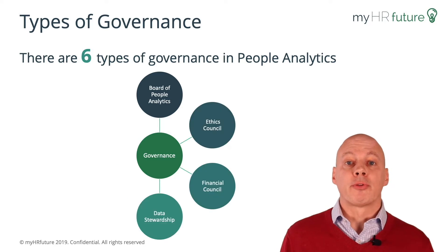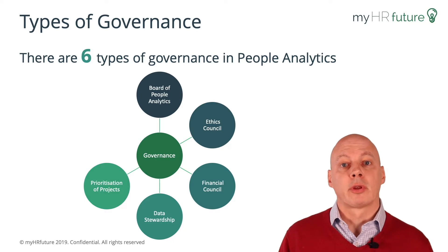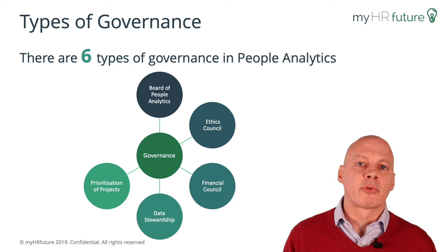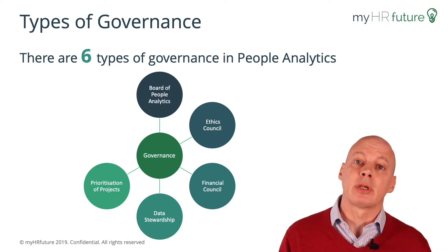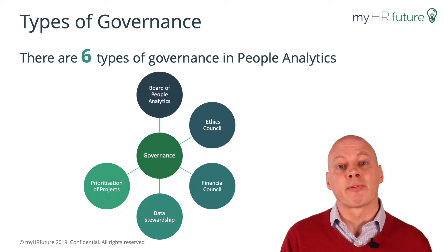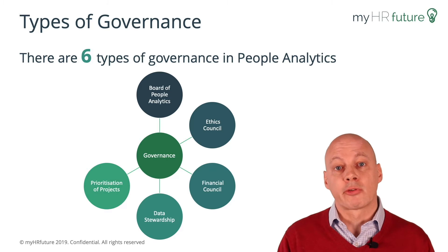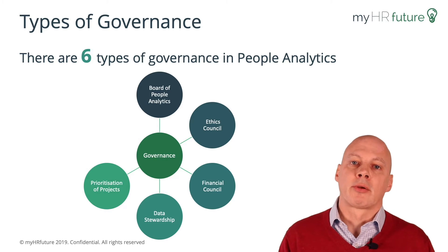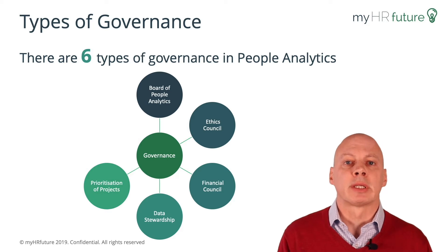The second, third, fourth, and fifth are all about specific aspects and they can be called subcommittees or councils — many different names. Essentially they are: number two, the ethics council, looking at privacy and ethics; number three is around financial aspects of the financial model and return on investment; the fourth one is around data stewardship and management of data; and the fifth one is around the prioritization of projects — essentially the work and the projects that have to be delivered.